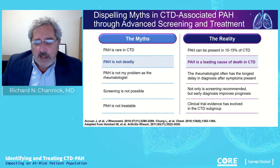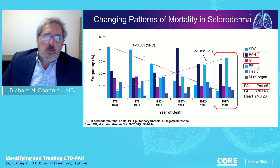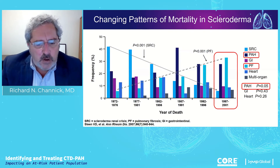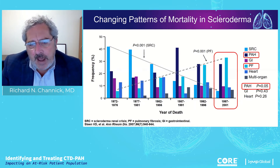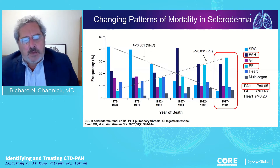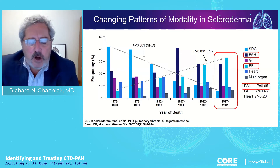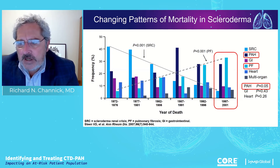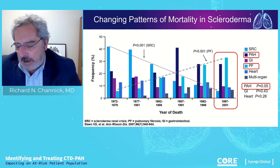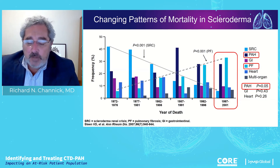What about the likelihood of death? Is this a deadly complication? Indeed it is. If you look at the causes of death in scleroderma over time, they have evolved quite a bit. Back in the 1970s, scleroderma renal crisis was by far the biggest cause of death, but that's now pretty well managed. Today, patients die from pulmonary arterial hypertension and pulmonary fibrosis — it's the lung involvement that drives mortality. Hence, it is very important to recognize these complications and hopefully treat them early.